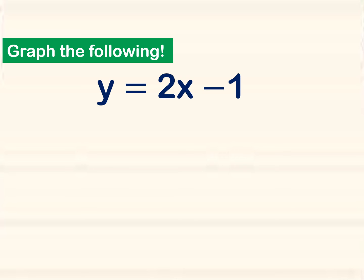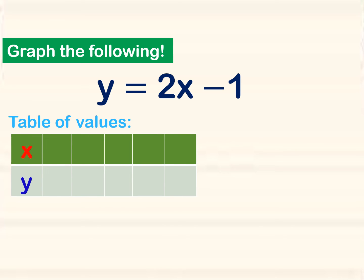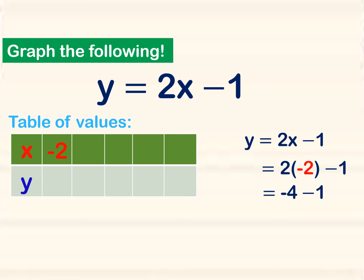Now let us graph the following equation: y is equal to 2x minus 1. This is an example of a two-variable linear equation. Before we graph, we are going to make a table of values consisting of your x values and your y values. If x is equal to negative 2, we copy the equation and substitute: 2 times negative 2 is negative 4, and negative 4 minus 1 is negative 5. So when x is equal to negative 2, y is equal to negative 5.